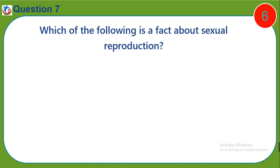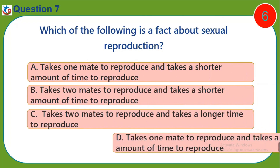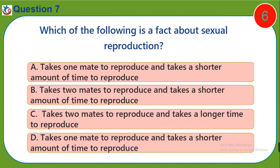Question seven: Which of the following is a fact about sexual reproduction? a) takes one mate to reproduce and takes a shorter amount of time, b) takes two mates to reproduce and takes a shorter amount of time, c) takes two mates to reproduce and takes a longer time to reproduce, d) takes one mate to reproduce and takes a shorter amount of time.